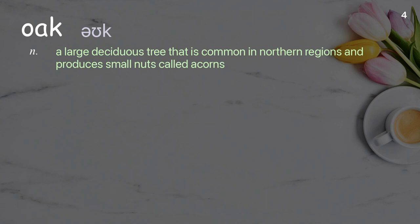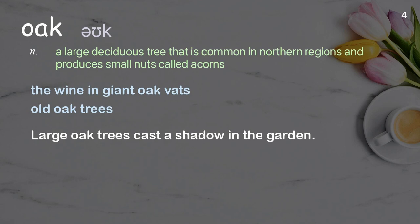Oak: A large deciduous tree that is common in northern regions and produces small nuts called acorns. Examples: the wine in giant oak vats, old oak trees. Large oak trees cast a shadow in the garden.